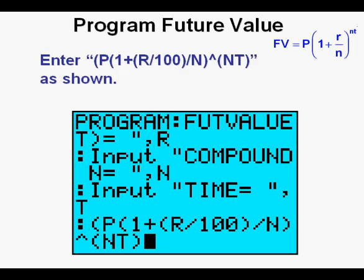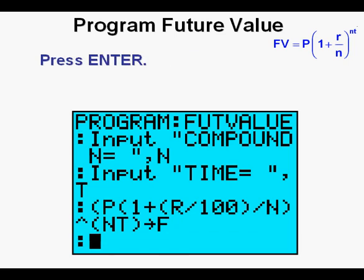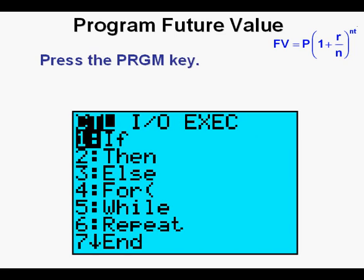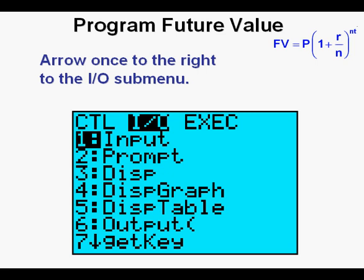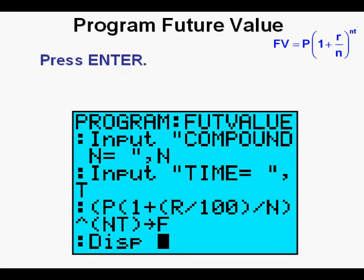Enter the formula for future value exactly as shown. Pay special attention to get the parentheses correct. Note the R divided by 100 to convert percentage to a rate that will work in the formula. Press enter, then press the storage key above the on key — this gives us a little arrow to the right. Enter the letter F for future value by pressing the alpha key then the cosine key. Press enter. Press the program key, arrow once to the right to the input/output submenu, arrow down to option number 3, display. Press enter.